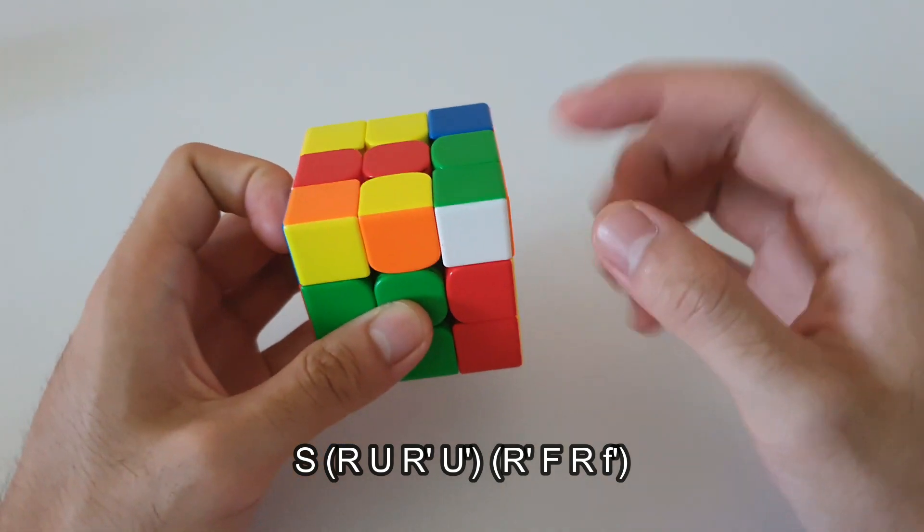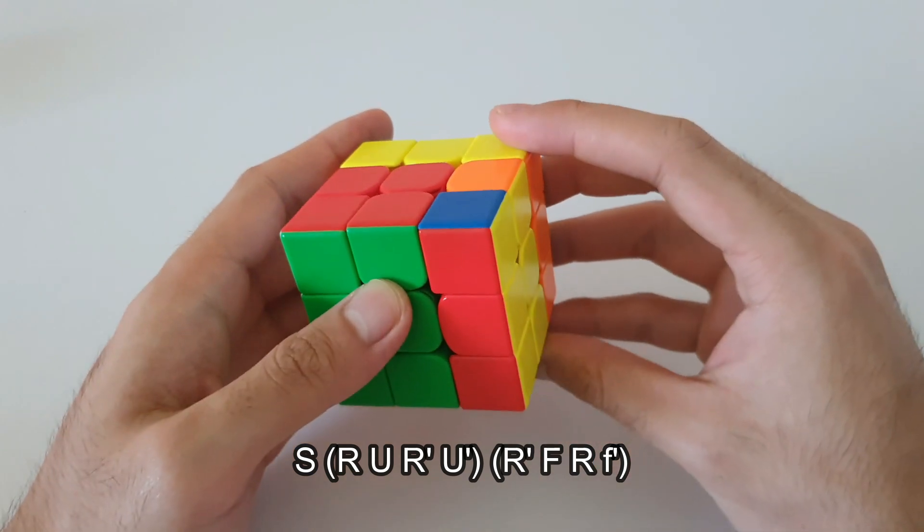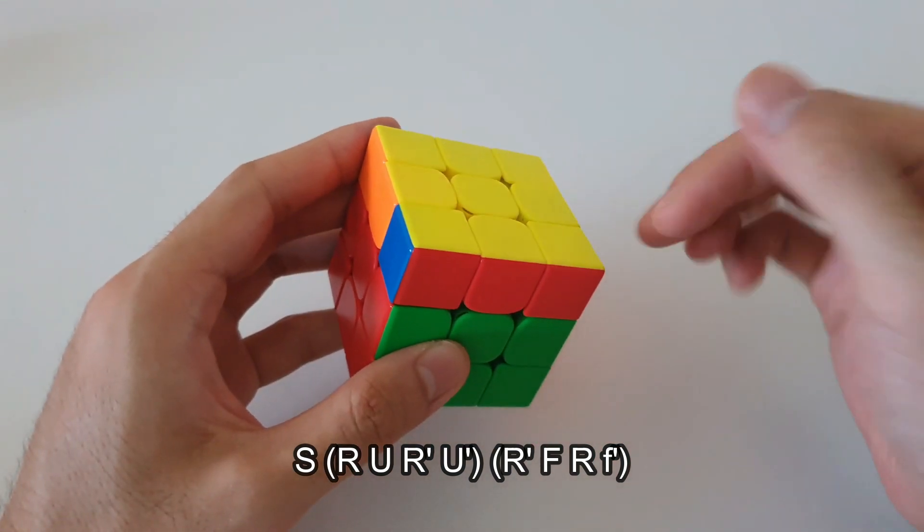And then start off with a sledge, change the first three moves of a right sledge. And then finally you want to do a wide F' and that solves that case.